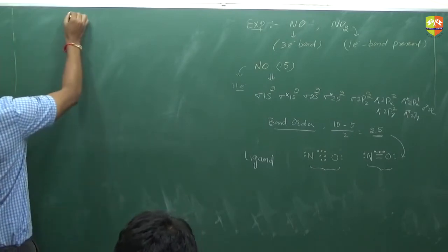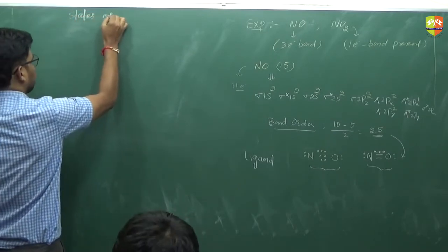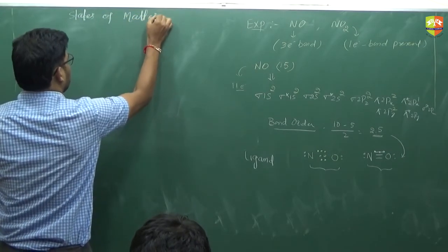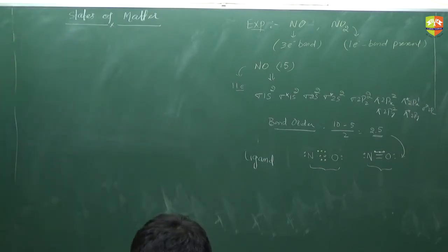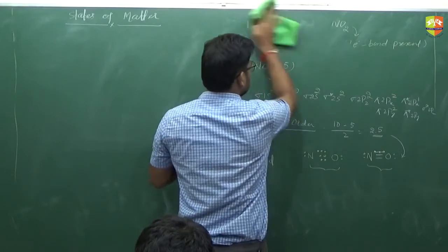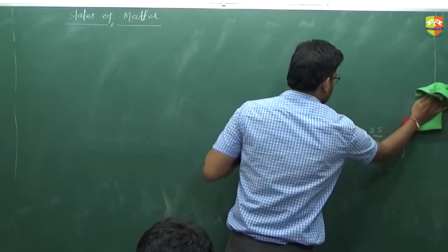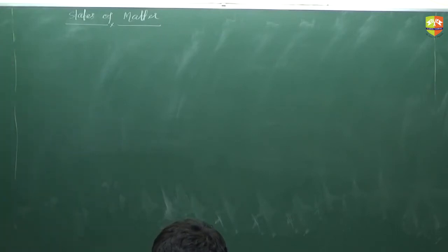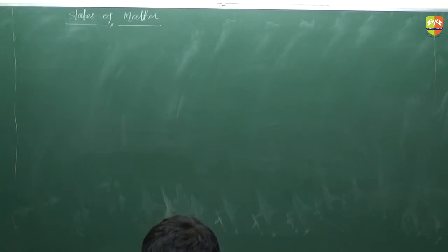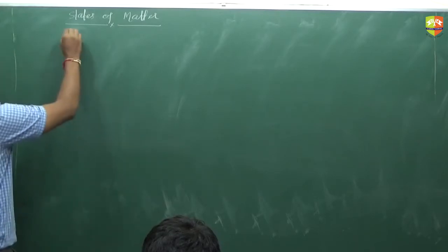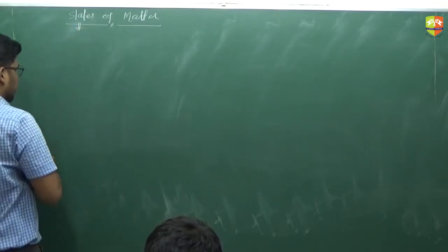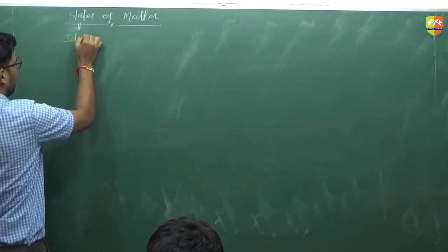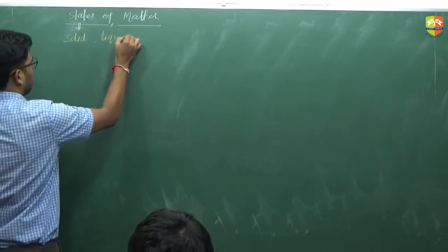Next we are going to start with the states of matter. There are three different states of matter: solid, liquid, and gas. There is also plasma at very high temperature. But in general, the three states we focus on are solid, liquid, and gas.